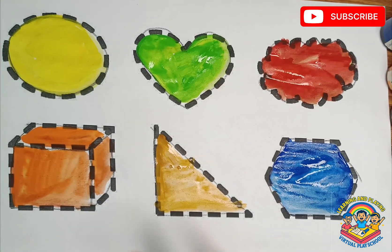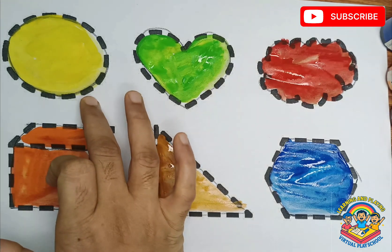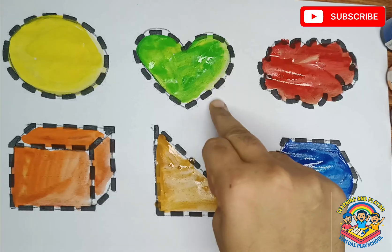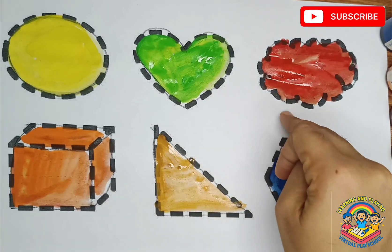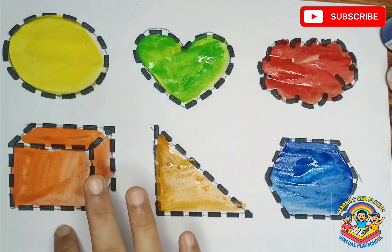Let's revise. Circle, what is this kids? This is circle. Heart, this is heart shape. Blob, this is an incomplete shape, so it's called blob. Cube.